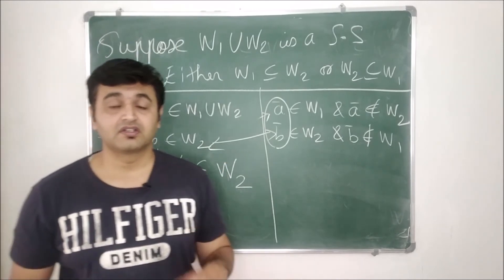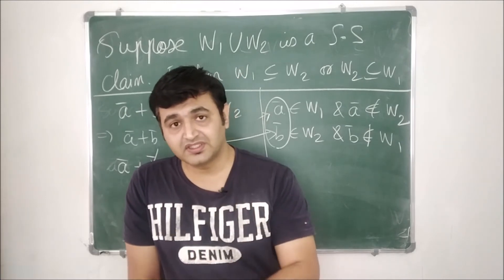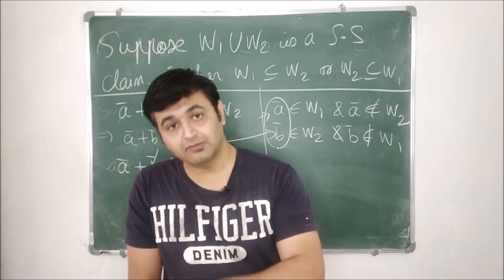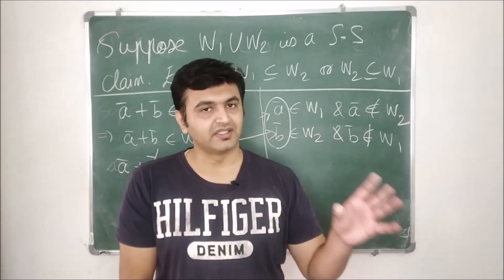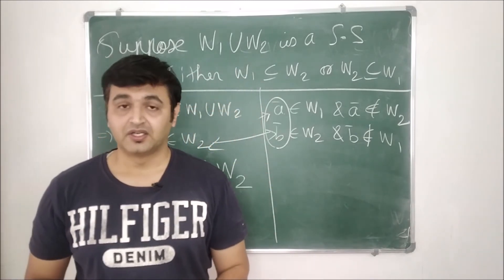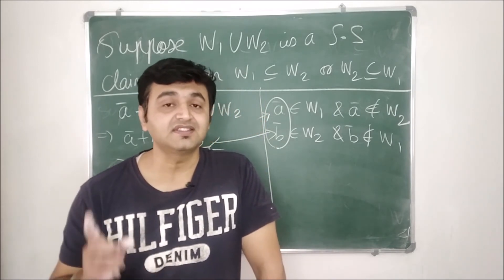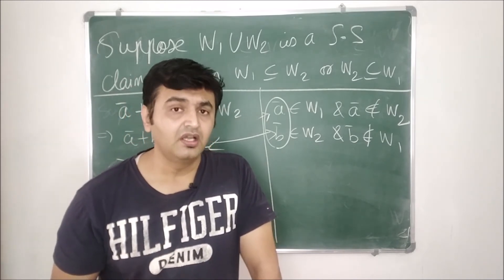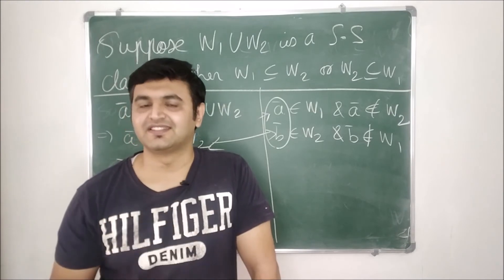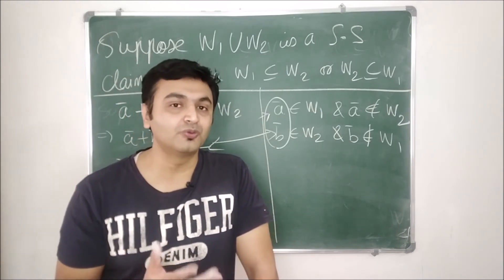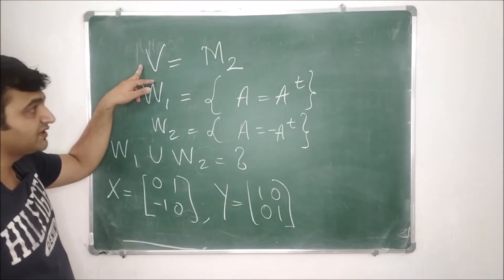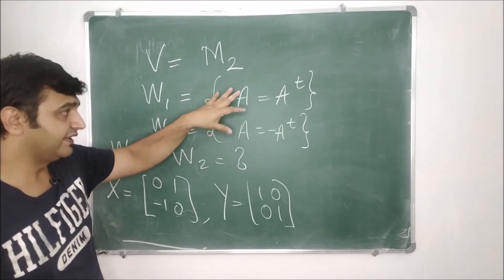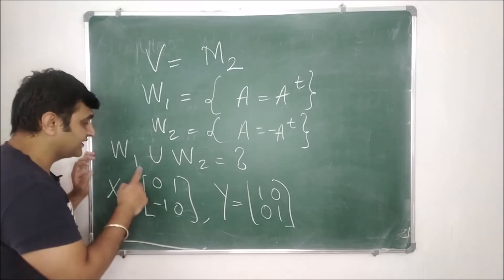We have reached a contradiction. Our assumption that w1 is not contained in w2 and w2 is not contained in w1 is wrong. Therefore, either w1 is contained in w2 or w2 is contained in w1. That completes the proof. Now let me give an example where the union of subspaces need not be a subspace — a different example from the one in the previous lecture.